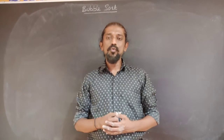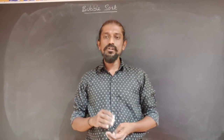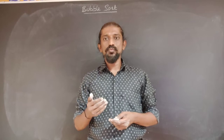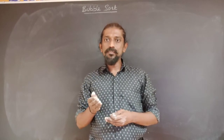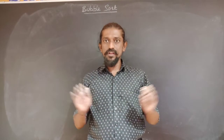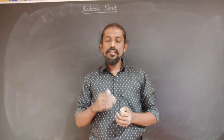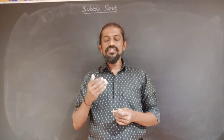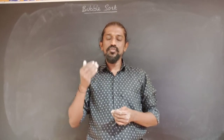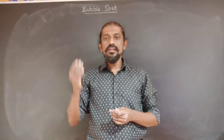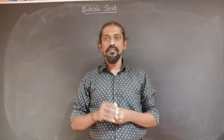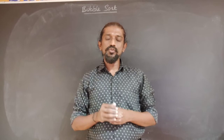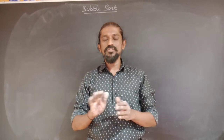First let us understand how the bubble sort algorithm works. In bubble sort, two consecutive or adjacent elements present at position j and j+1 are compared, and they are swapped if they are out of order; if they are in order they are left as they are. What do we mean by out of order? If we want to arrange the elements in ascending order, then if the element at position j+1 is smaller than the element at position j, we exchange them, because in ascending order the smaller element has to appear before the larger element. If the larger element is at j+1 and the smaller element is at j, we leave it as it is because they are in order.